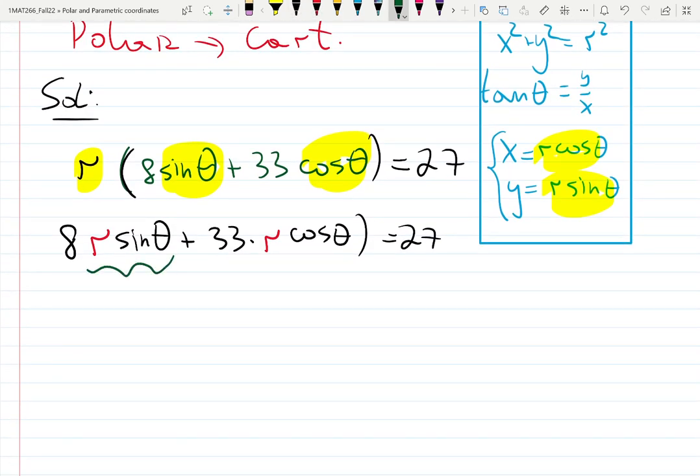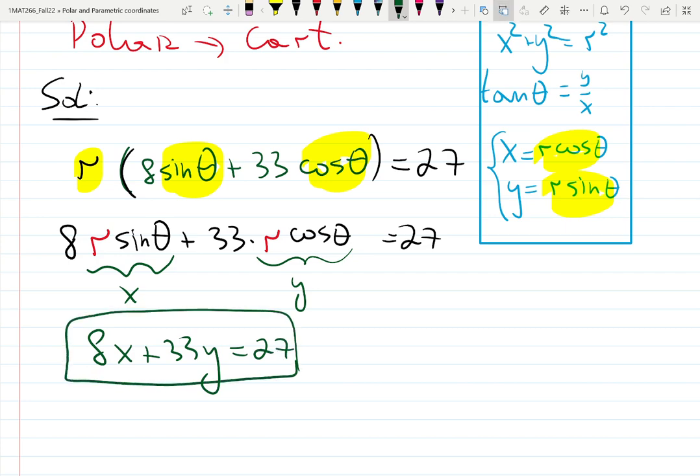And you figure out that R sine is X. There's no parentheses here. And R cosine is Y. And it becomes 8X plus 33Y equals 27. Boom. Not only we got rid of both R and theta at the same time, but we also got right away into the answer. It's a line.